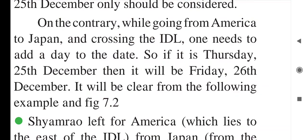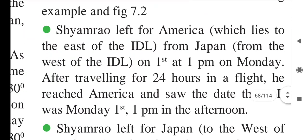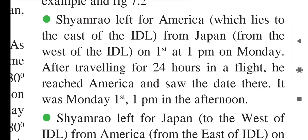If you are leaving on Thursday, you have to consider it will be Friday when you arrive. If leaving on the 25th, you have to consider it is the 26th. From Japan to America — east to west — if you are leaving on Thursday the 25th, when you reach your destination it will still be Thursday the 25th, because western countries are behind. Here an example is given of Shamra, who left for America lying to the east of the International Date Line.